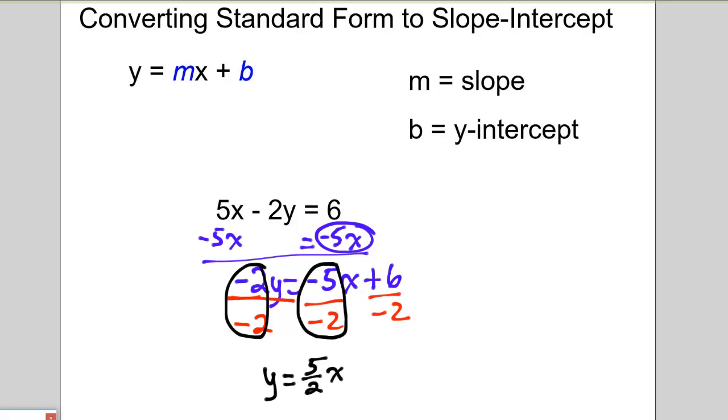And the x comes along. And our last calculation here is a positive 6 divided by negative 2, which then gave me a negative 3. And here is my slope-intercept equation.